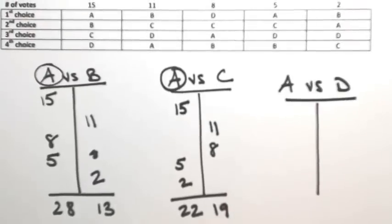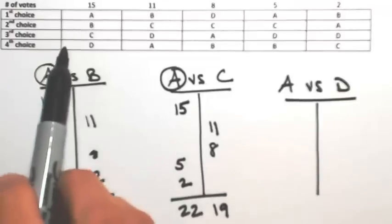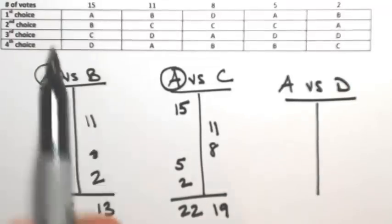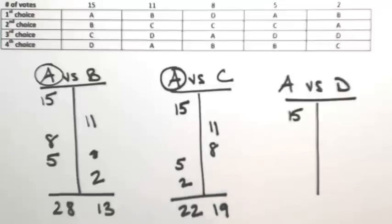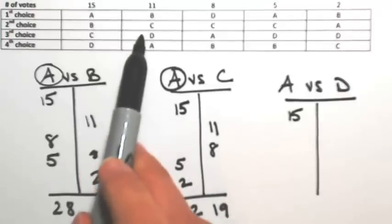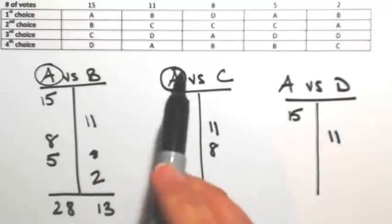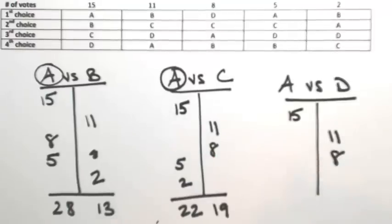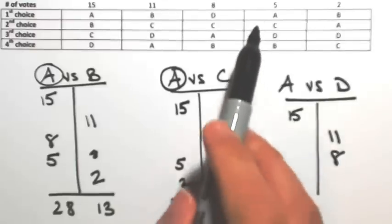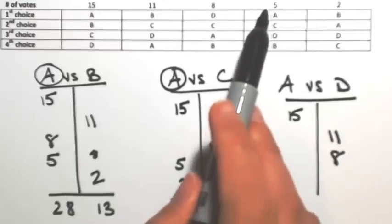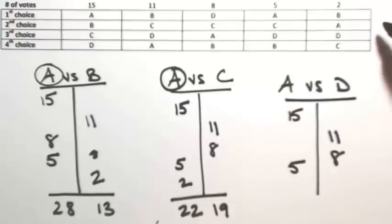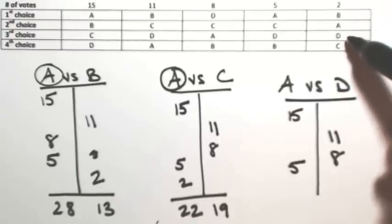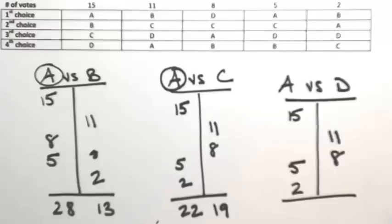So looking at each column, let's see who wins A or D. In the first column, A is over D, so A gets the 15 again. In the second column, D is over A, so D gets 11. In the third column, D is over A, so D gets 8. Fourth column, A is over D, so A gets 5. And in the last column, A is over D, so A gets 2. So A wins that competition.